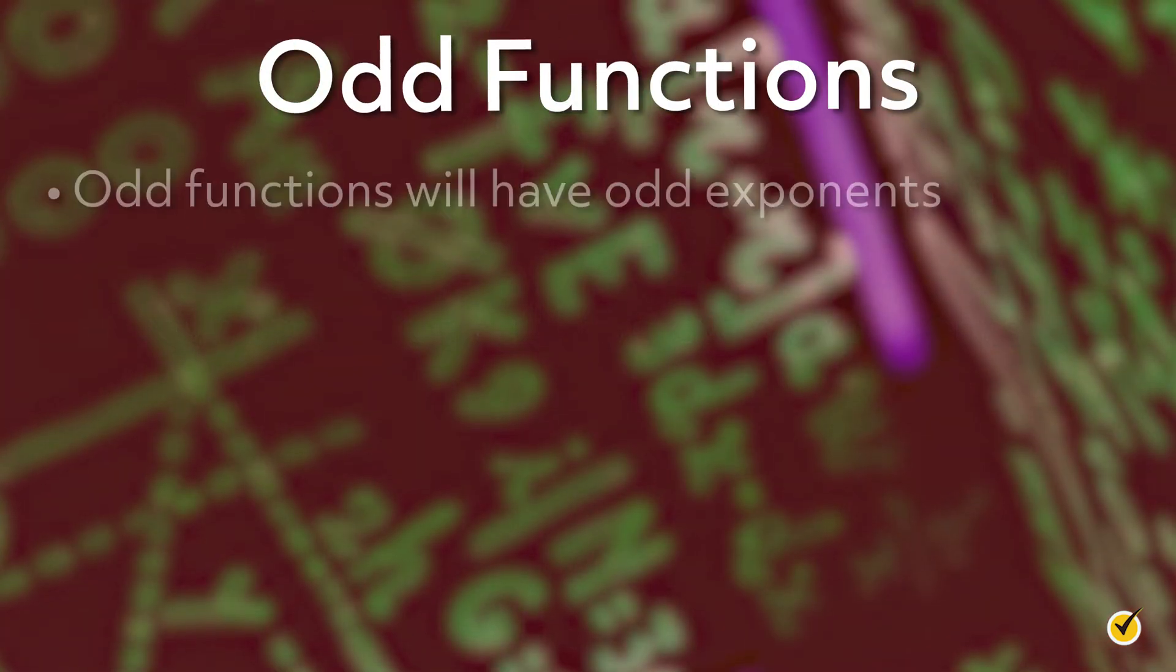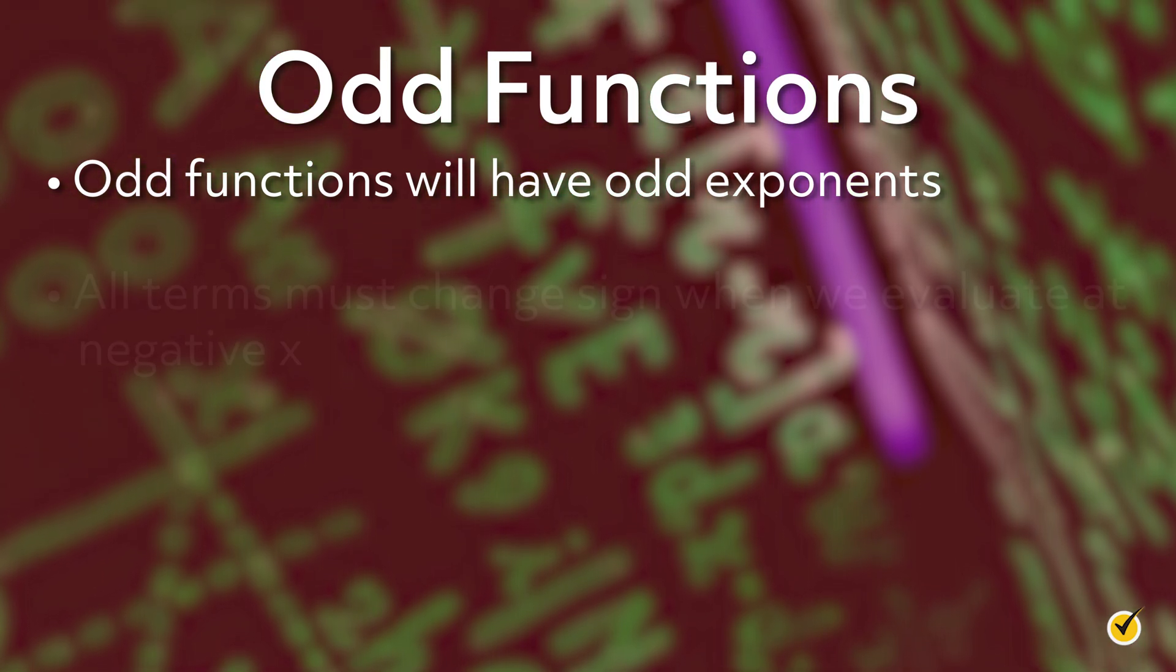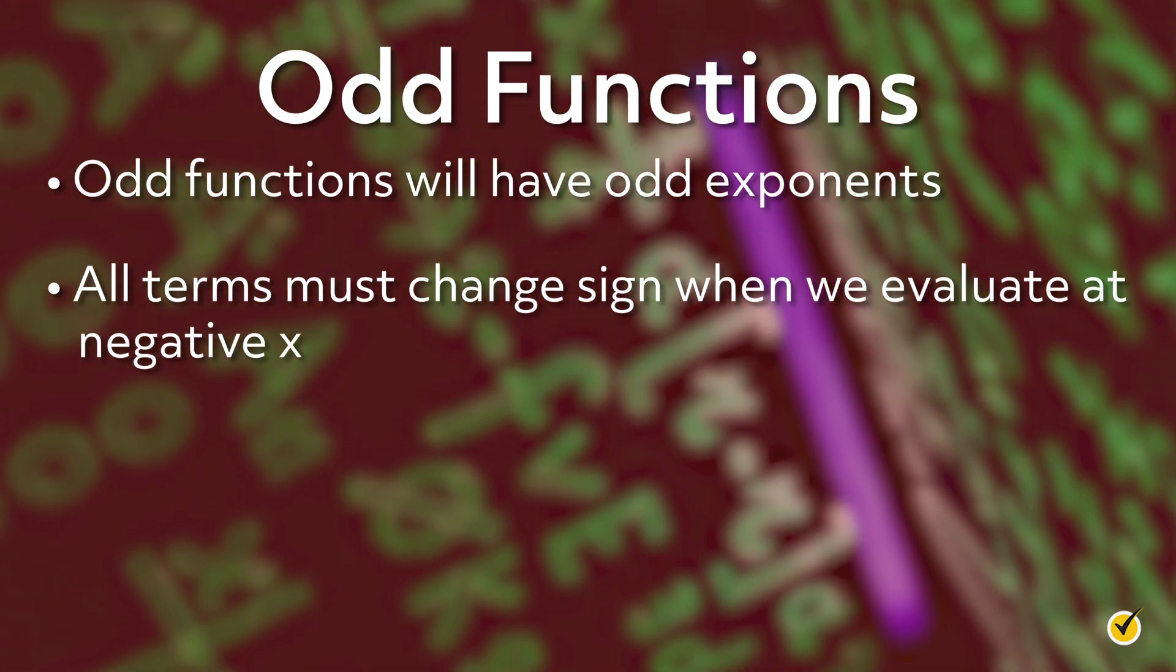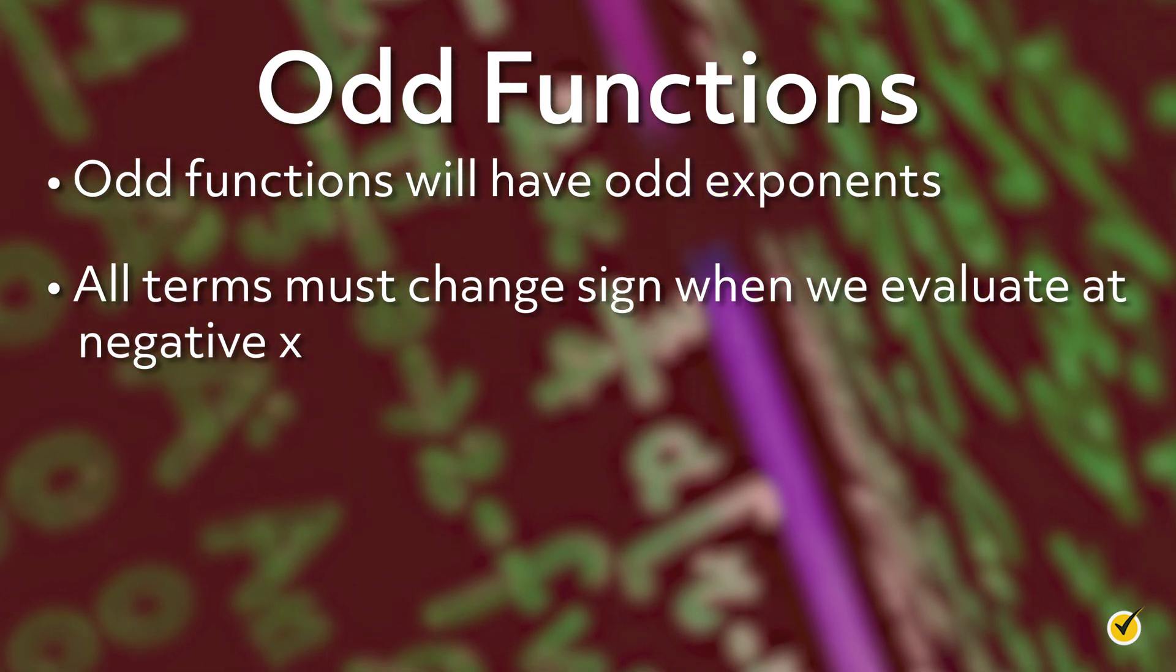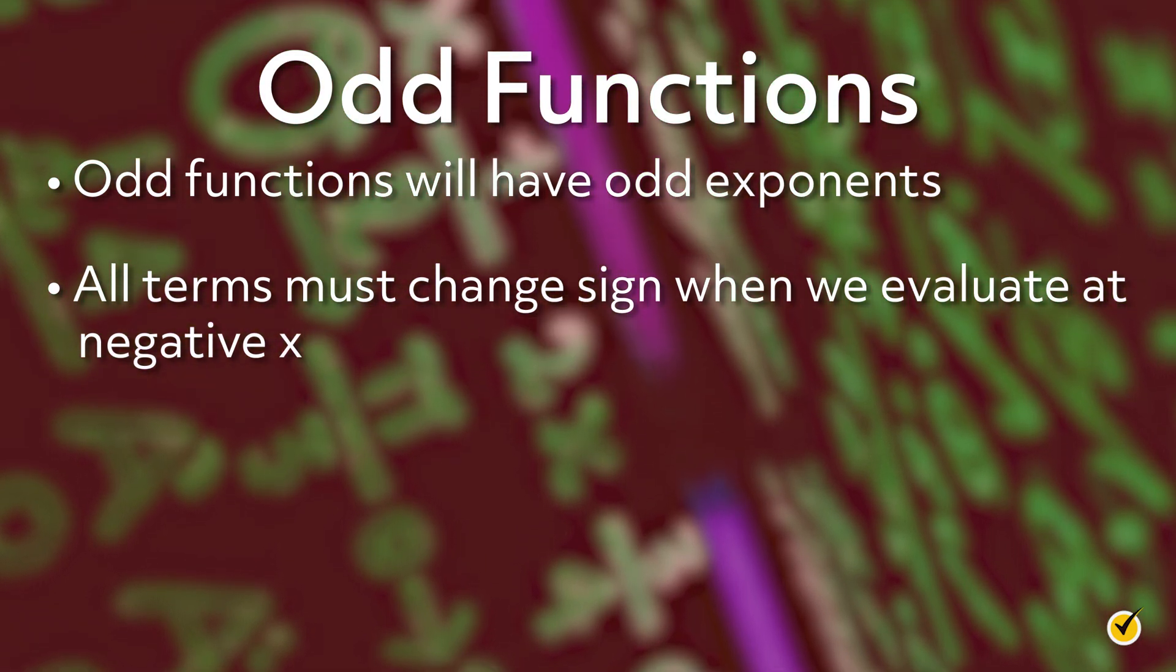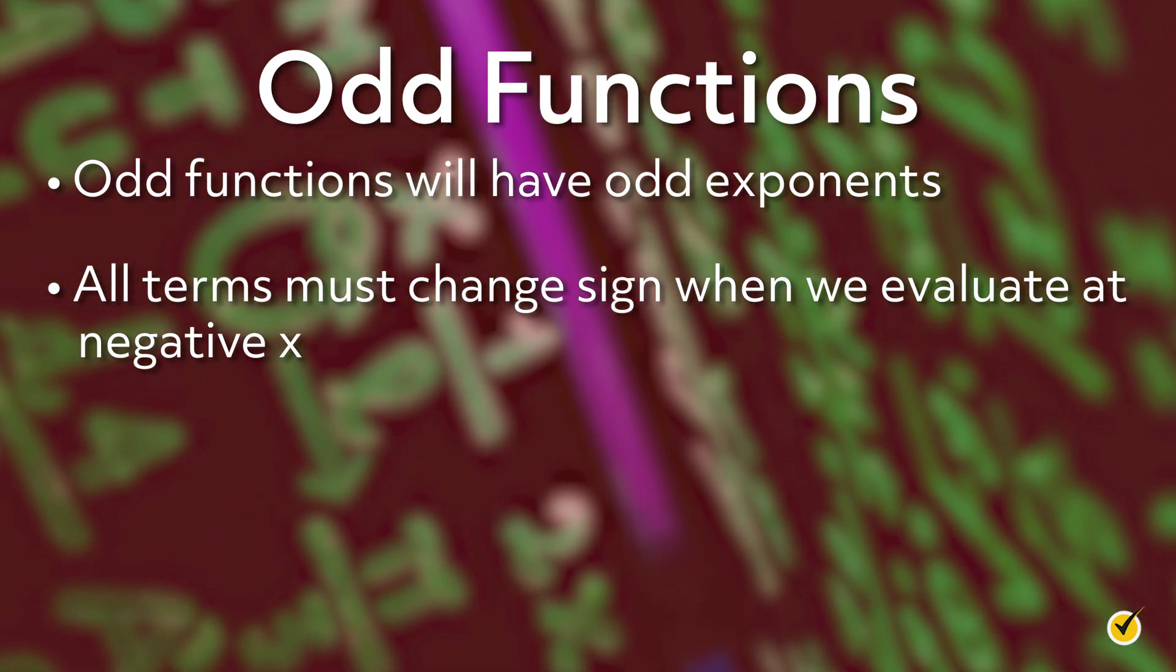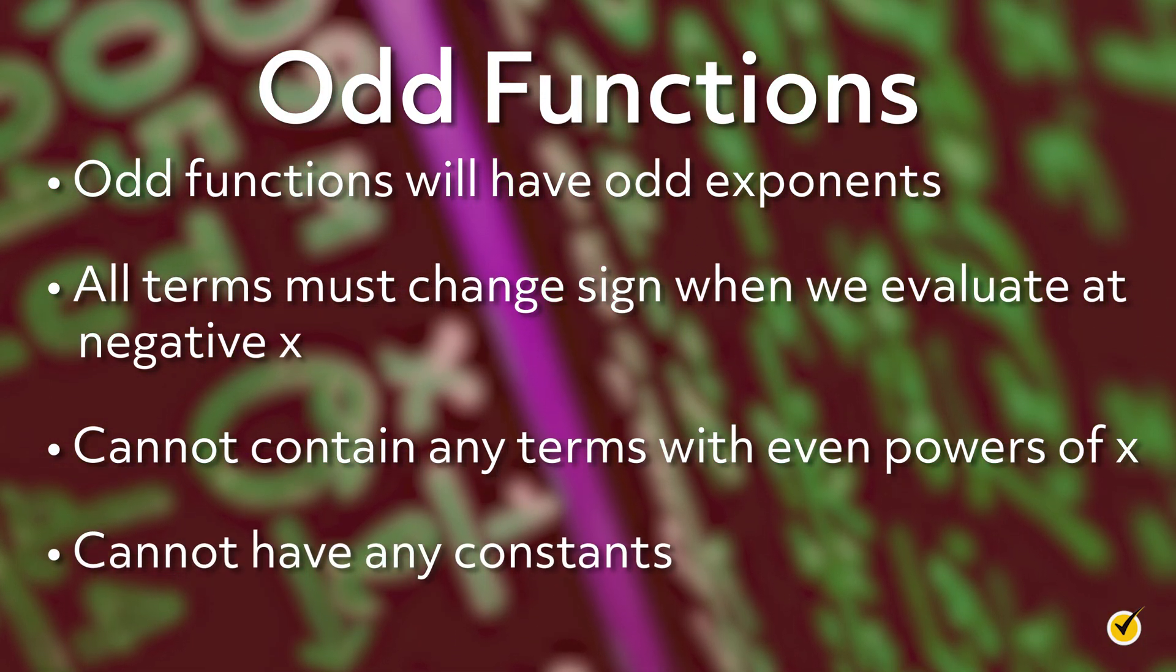It may be unsurprising now that odd functions likewise will have odd exponents. Remember that in order for a function to be odd, all terms must change sign when we evaluate at negative x. Clearly any term with x to the first power will change sign when we plug in a negative value of x. In the same way x to the third power, the fifth power, and so on, will all change sign when we plug in a negative value for x. As we mentioned earlier, when a term has an even power of x, it will not change sign. That means that an odd function cannot contain any terms with even powers of x and it cannot have any constants. You may recognize even and odd functions later on in calculus when it comes to dealing with a Taylor expansion.